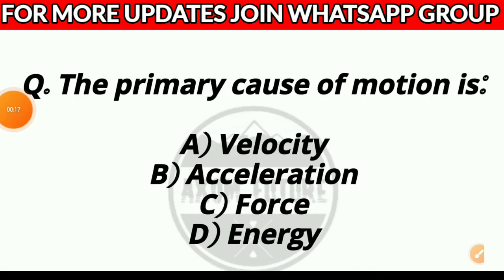Question 12. The primary cause of motion is: Option A, velocity; Option B, acceleration; Option C, force; or Option D, energy. Answer: Option C, force.